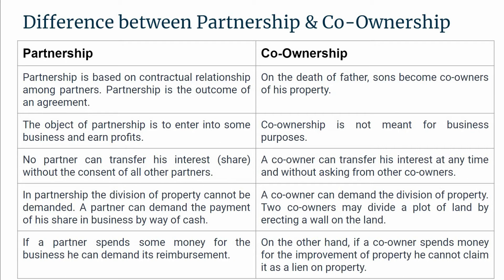For example, if two sons want to divide the property of their father and they are co-owners of a plot of land, they can erect a wall on the land, and the two co-owners then have their own separate plots of land — the land is physically divided.